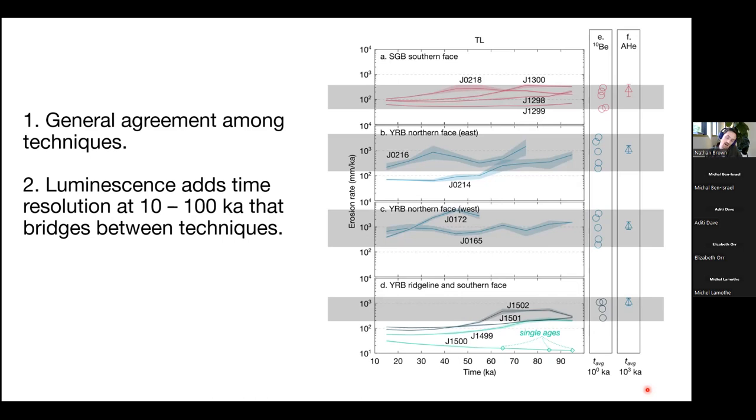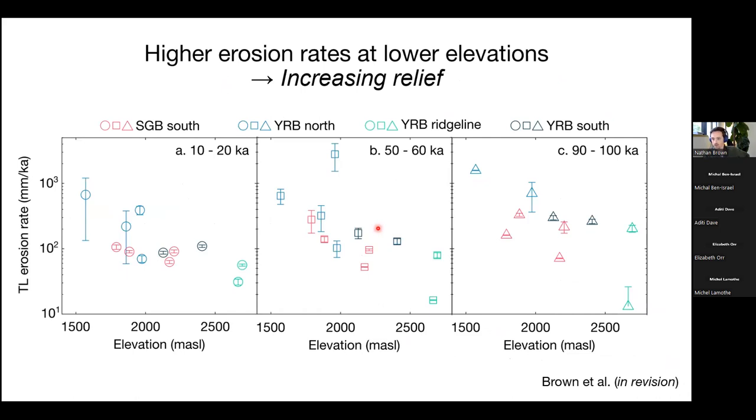The nice thing about these luminescence measurements in particular, though, is the time resolution that you gain. So you can see things, for example, like a general deceleration in erosion in this San Gregorio region, and other regions where you sustain this really high erosion rate to present.